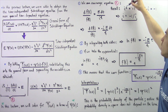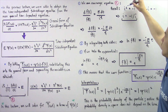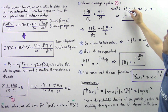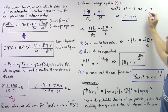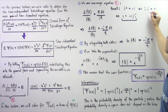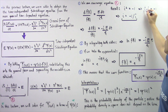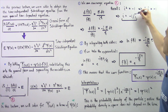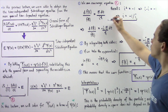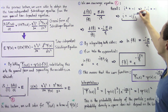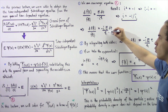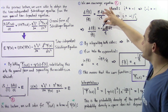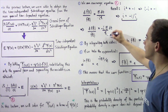Recall that i squared equals negative one. Another way to represent i squared is i multiplied by i, which equals negative one. If we divide both sides by i, one of the i's cancels, and we see that i equals negative one divided by i. Replacing this i with negative one divided by i, we get: df(t) divided by f(t) equals negative i times E times dt divided by h-bar.